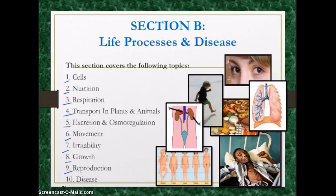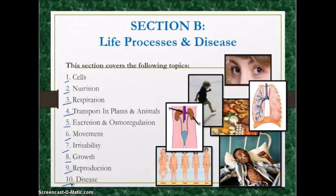The final topic in Section B is disease. You should know your different types of diseases: pathogenic, hereditary, deficiency, and physiological diseases. Pay special attention to hypertension, diabetes (the difference between type 1 and type 2), and understand the differences between malaria and dengue — including your vectors and pathogens. That covers Section B.